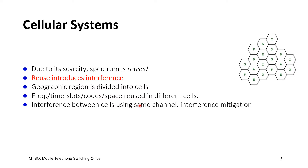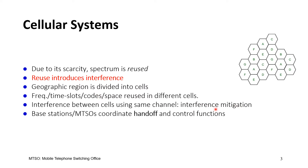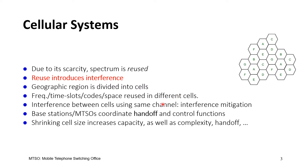Since there is interference between cells, we have to think about interference mitigation techniques. Another key principle of cellular systems is handoff — if you move from one cell to another, you'll be served by one base station and then handed off to the next. If we make cell sizes smaller, we can reuse frequency more; that's the trend of femtocells and small cells, though complexity and handoff frequency would increase.